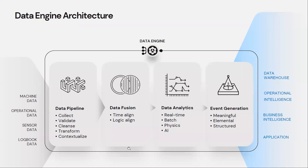This is the structure of the data engine. The data engine is able to collect data from whatever sources are needed, clean the data, validate the data, and contextualize the data. The next step is data fusion, which is very critical. In order to make the best decisions, you often work with multiple streams of data that are not time-aligned or logic-aligned, so you have to align them — and sometimes that's tricky.